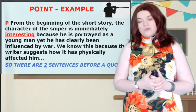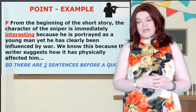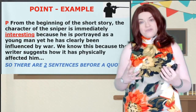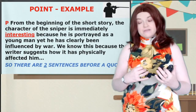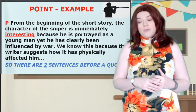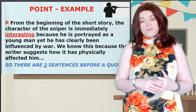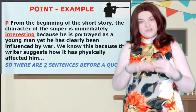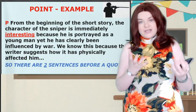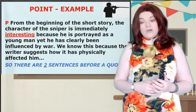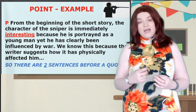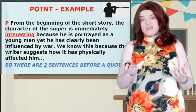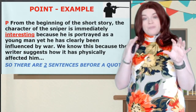Here's an example of a point. 'From the beginning of the short story the character of the sniper is immediately interesting' — I've underlined that because that's what the question is, an interesting character question — 'because he's portrayed as a young man, yet he's clearly been influenced by war.' Next sentence gives more context: 'We know this because the writer suggests how it has physically affected him.' So that's two sentences before a quote.